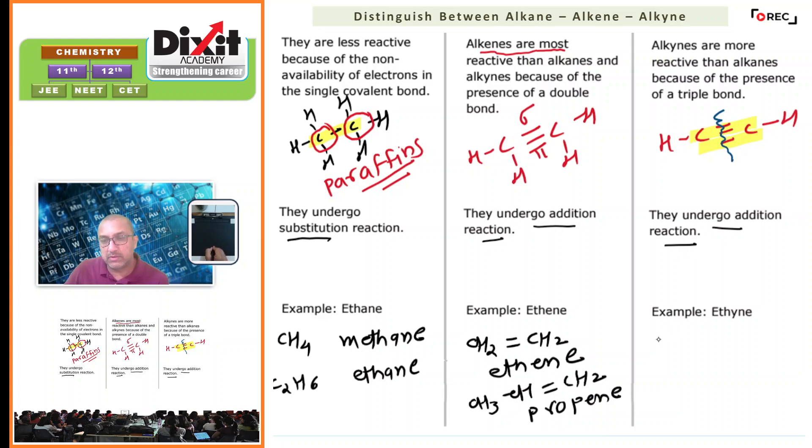For alkynes, the common example is C2H2, which is known as acetylene.